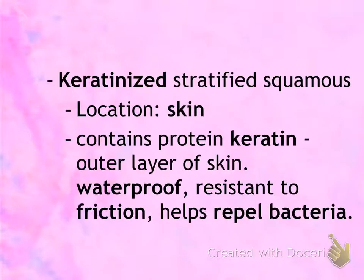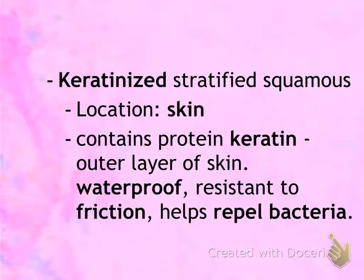The other type is keratinized stratified squamous, located in the skin. The keratin found on skin creates extra protection — protection against water loss, physical damage like scratches or friction, and also keeps out germs like bacteria.